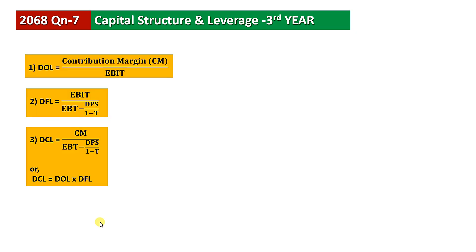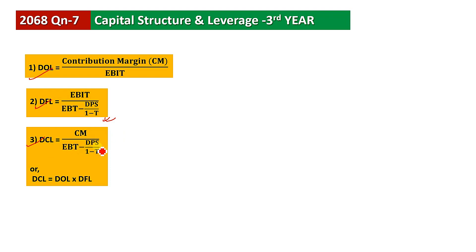We will have three: degree of operating leverage, degree of financing leverage, and degree of combined leverage. Degree of operating leverage equals contribution margin divided by EBIT. Degree of financing leverage equals EBIT divided by EBT minus DPS divided by 1 minus tax. Degree of combined leverage equals contribution margin divided by EBT minus DPS divided by 1 minus T. Degree of combined leverage also equals degree of operating leverage multiplied by degree of financing leverage.